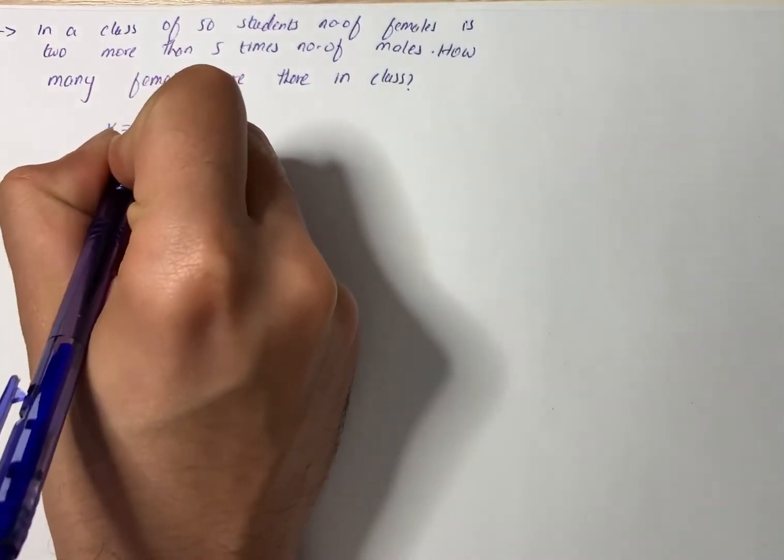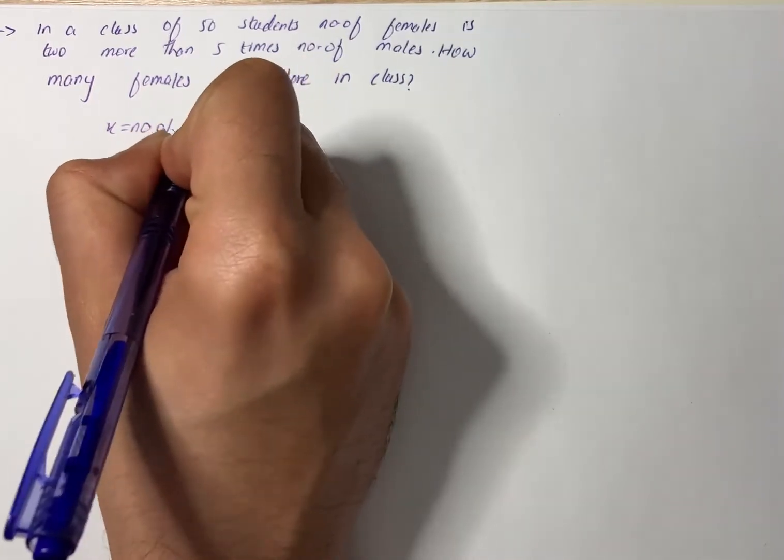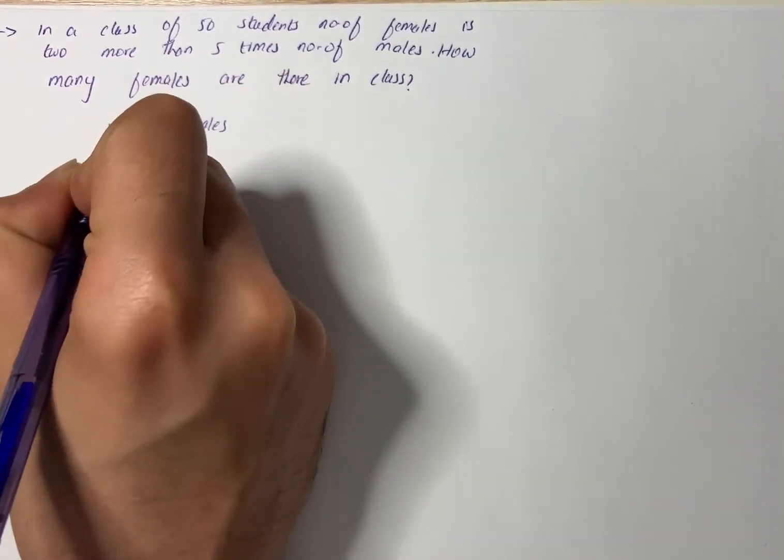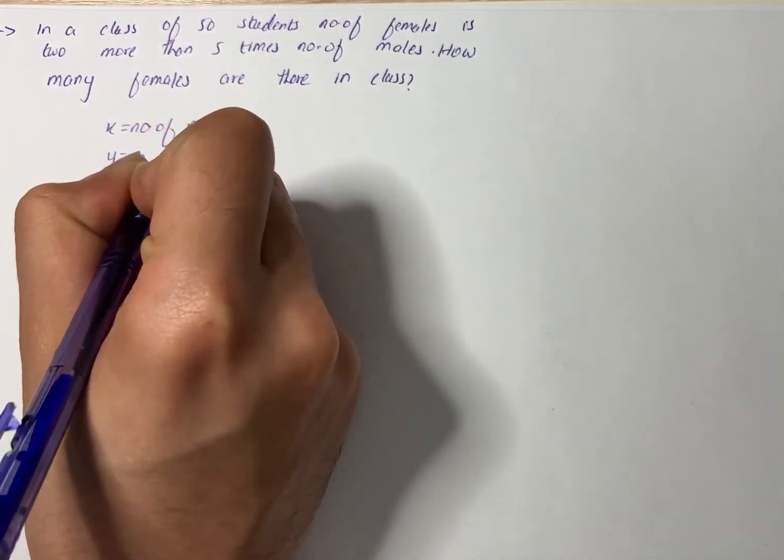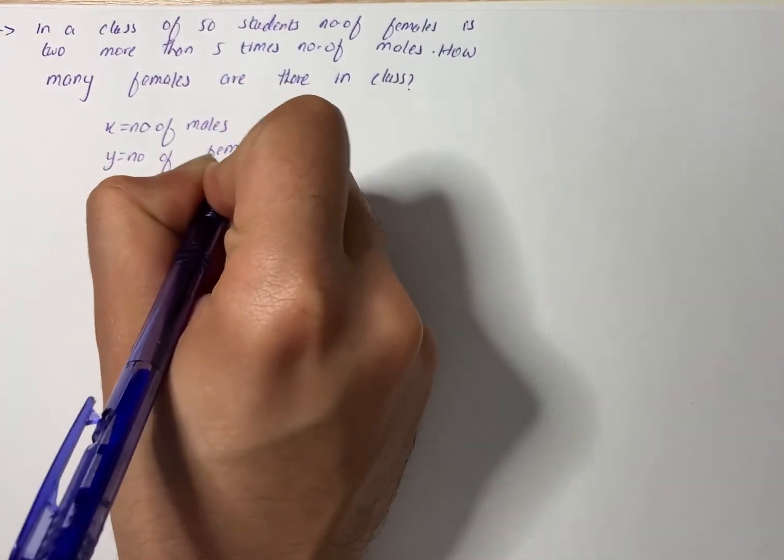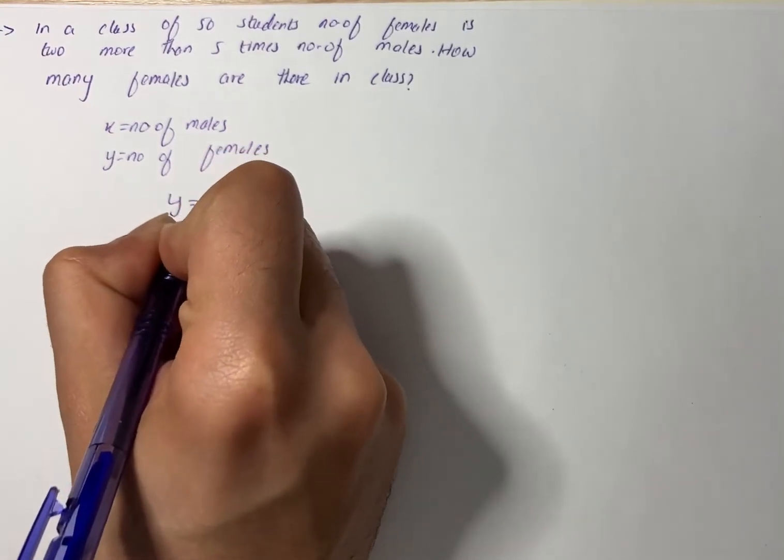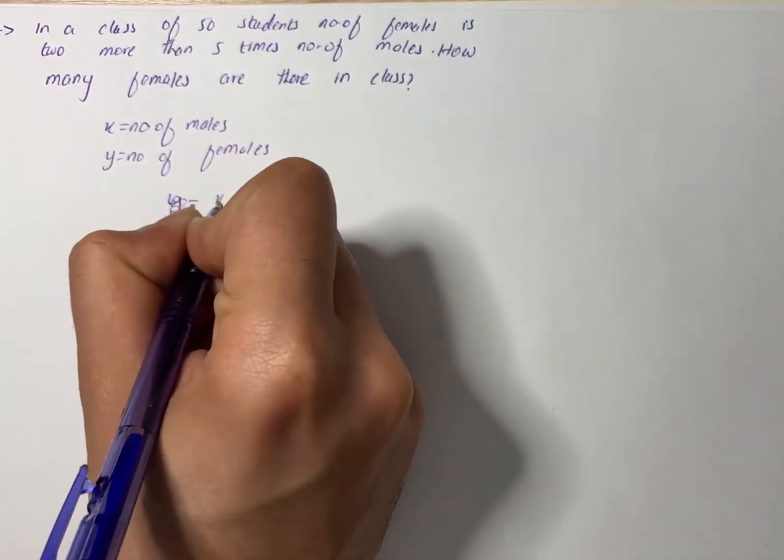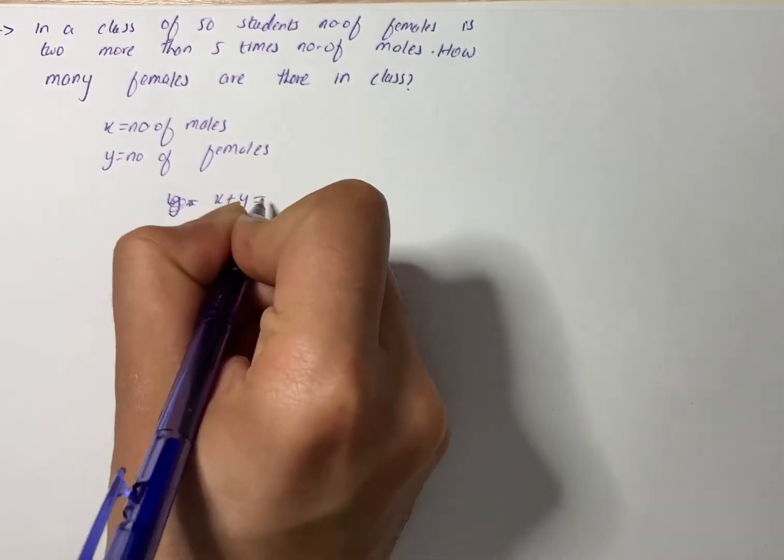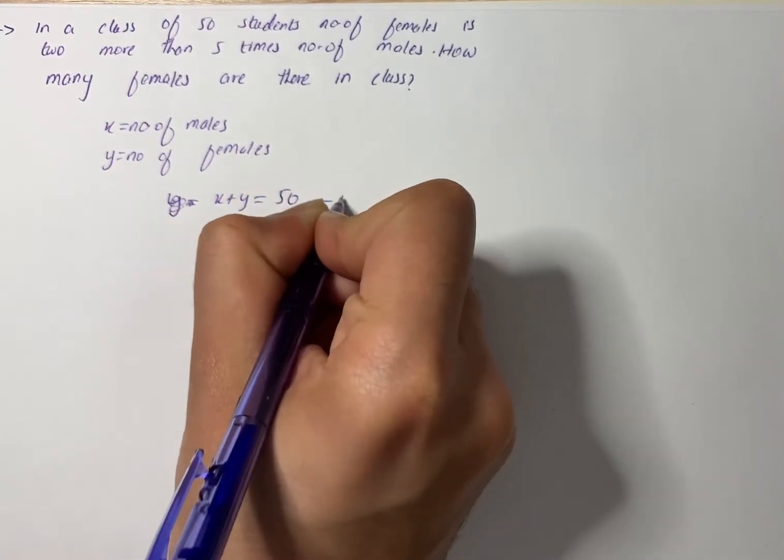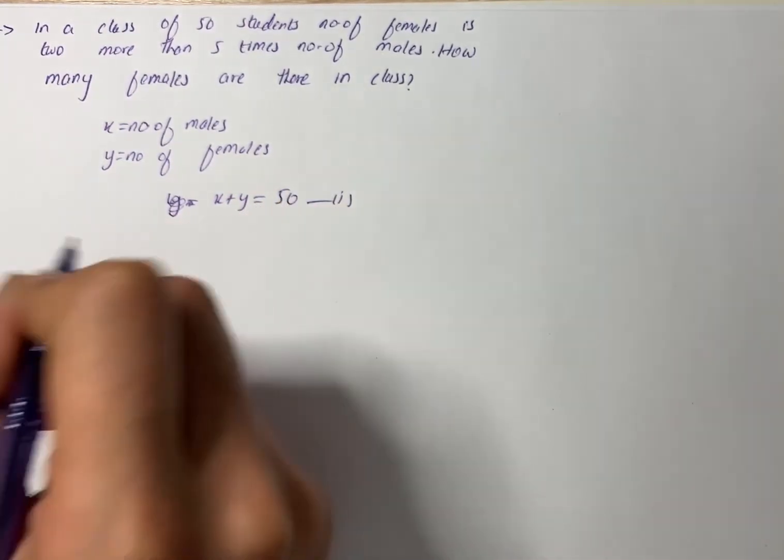x equals the number of males and y equals the number of females. From the given conditions, we can derive that x plus y equals 50. Let this be equation number 1.